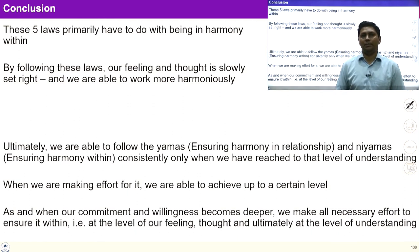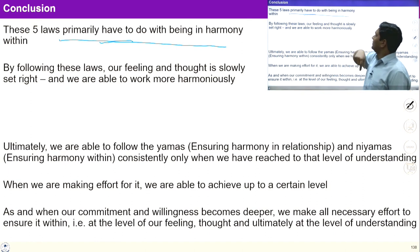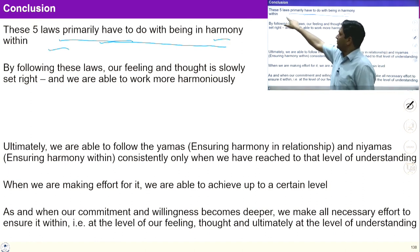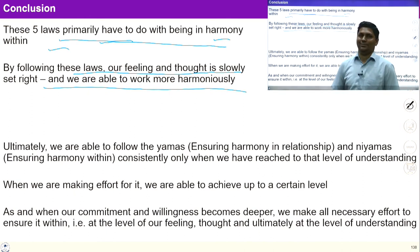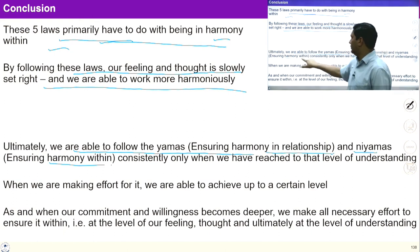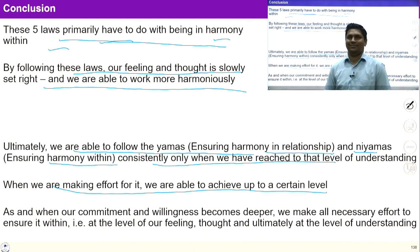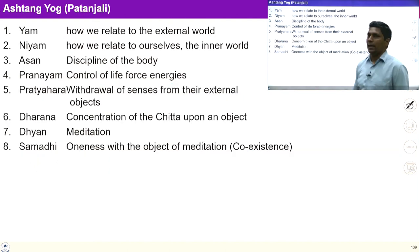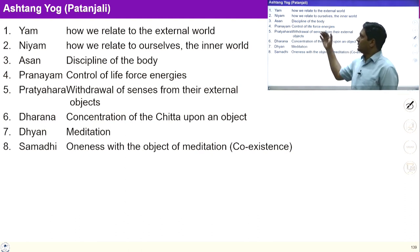Let us sum up what we have studied. These five Niyams help to do harmony within. By following these laws, our feeling and thought is slowly set right and we are able to work more harmoniously. Ultimately we are able to follow these Yams — ensuring harmony in relationship — and Niyam ensures harmony within consistently. When we make effort for it, we are able to achieve up to a certain level. By this way, our mind, our behavior, our work get purified — meaning they get aligned with coexistence.